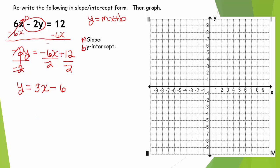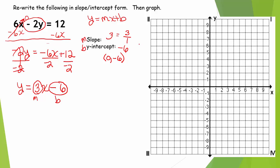Now I'm in the form y equals some number times x, so that 3 must be our slope, plus or minus some number — negative 6 must be our y-intercept. Our slope is 3, our y-intercept is negative 6, so the coordinates are (0, negative 6). It's important that if your slope is 3, you rewrite it as a fraction 3 over 1, because the top number tells us up or down, and the bottom number tells us left or right.